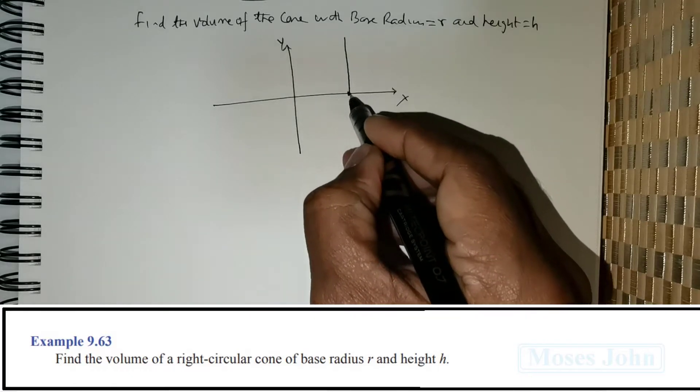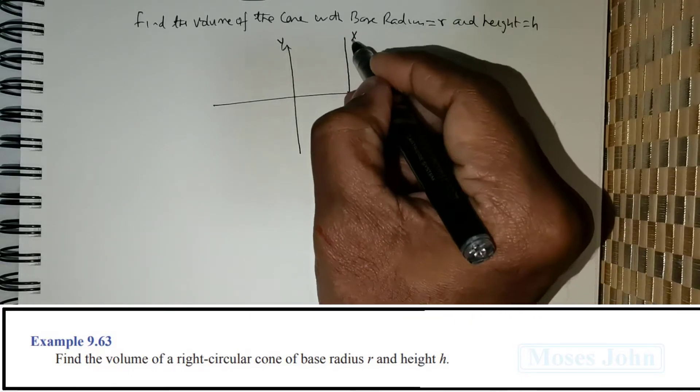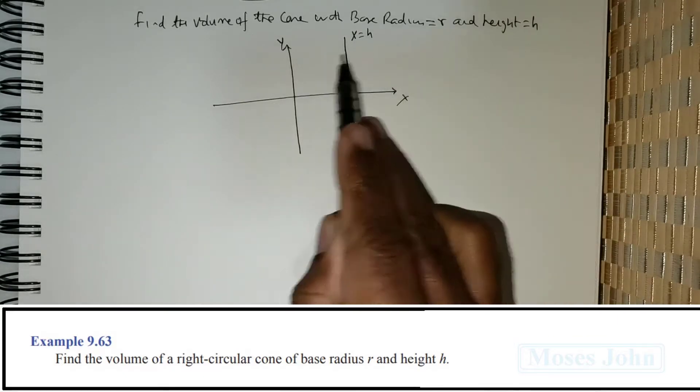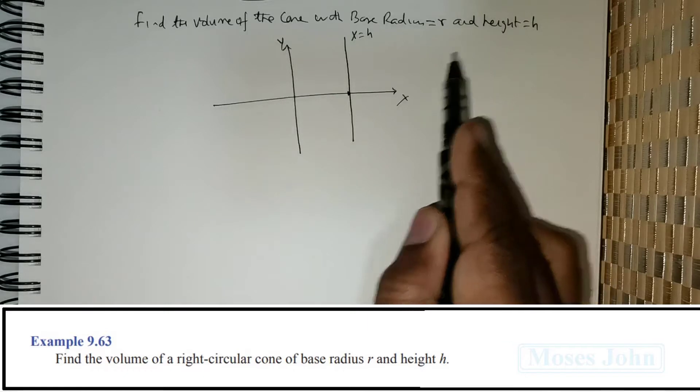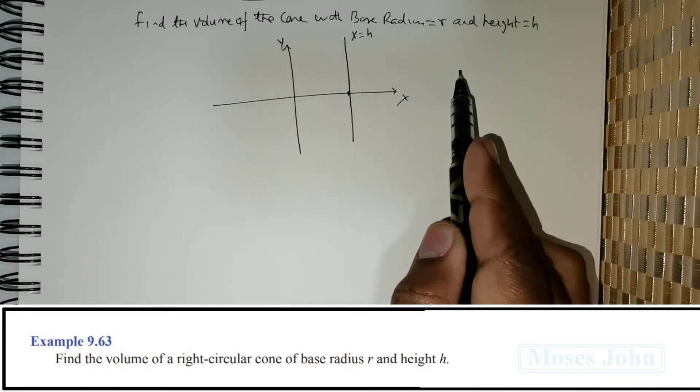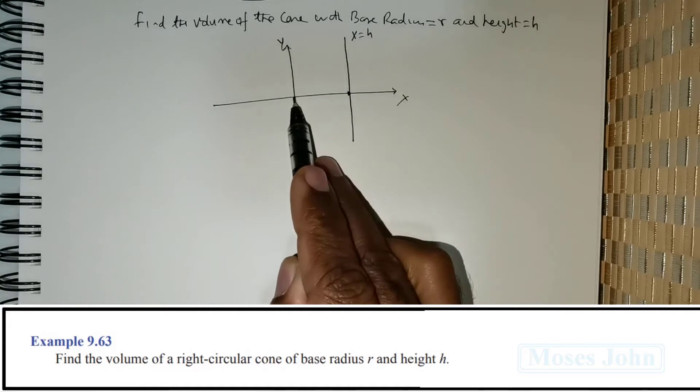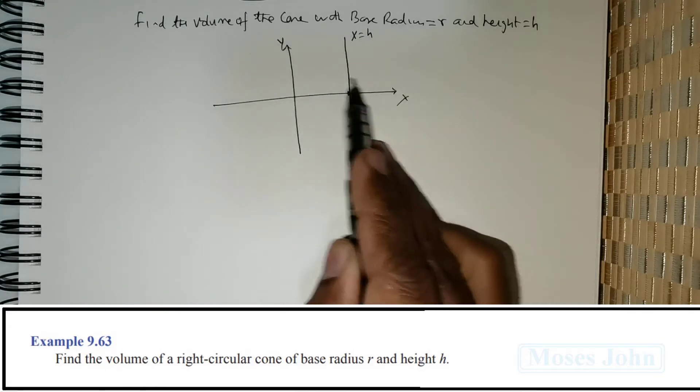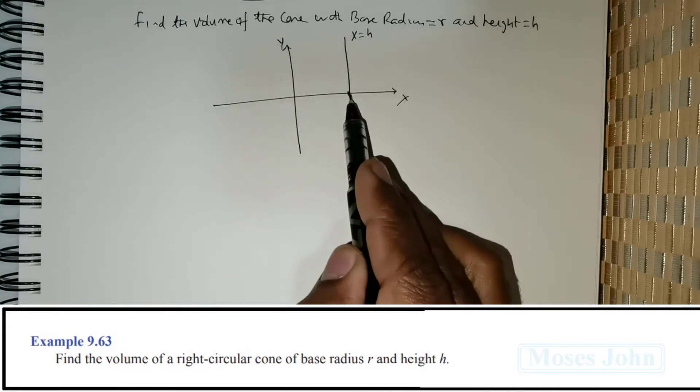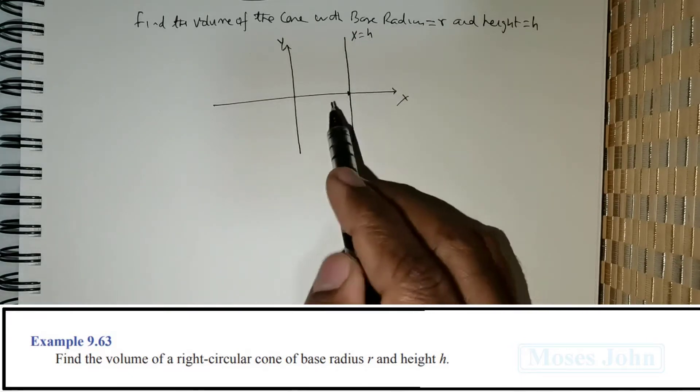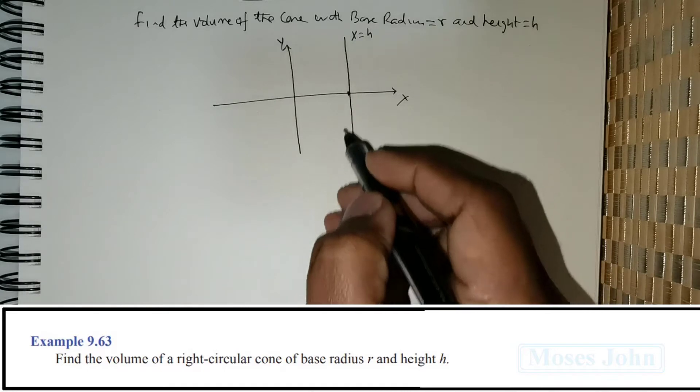Now, you can shift this line in terms of what height you want. So this is variable. In other words, you can change the height. So if you want a small right-circular cone, you fix the value of x accordingly. So that is the understanding of this line, x is equal to h.